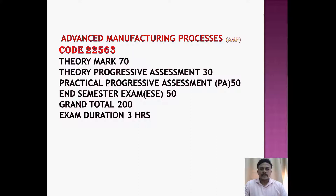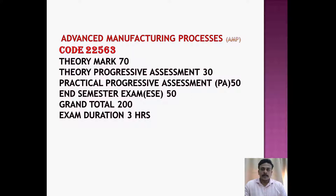Advanced Manufacturing Processes is a 70-mark theory paper with 30 marks for internal assessment. Of the 30 internal marks, some are reserved and 10 marks are for the micro project. The unit tests carry 20 marks.